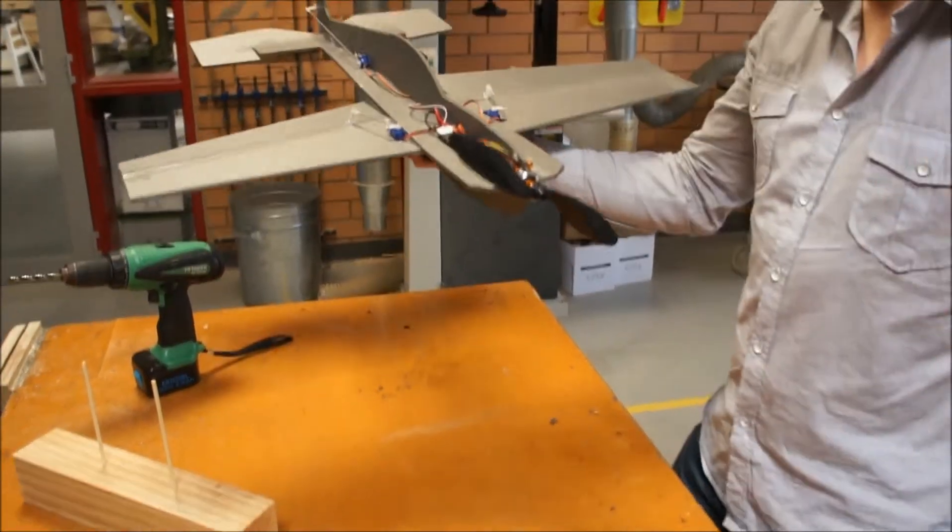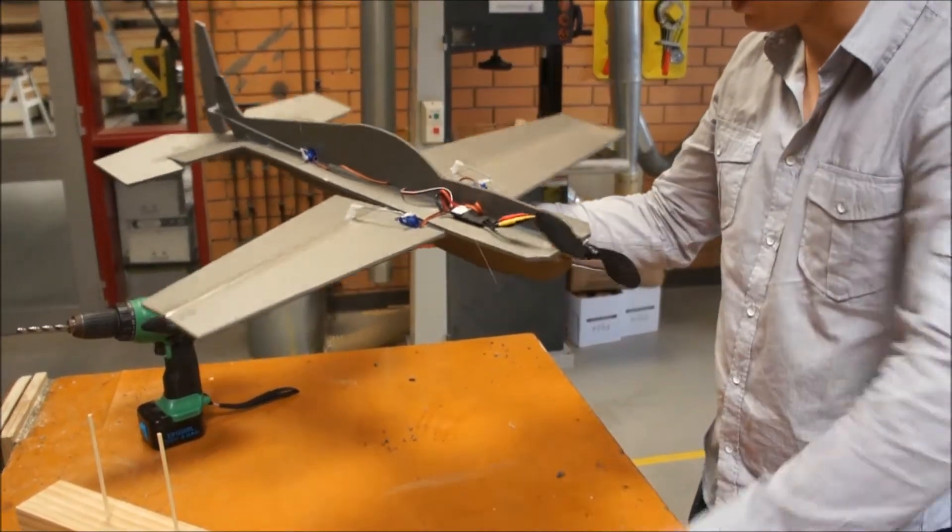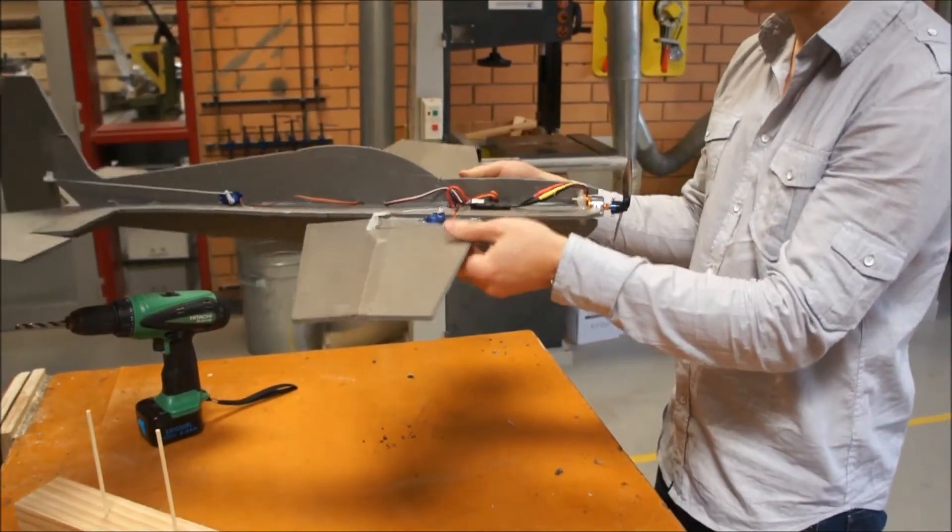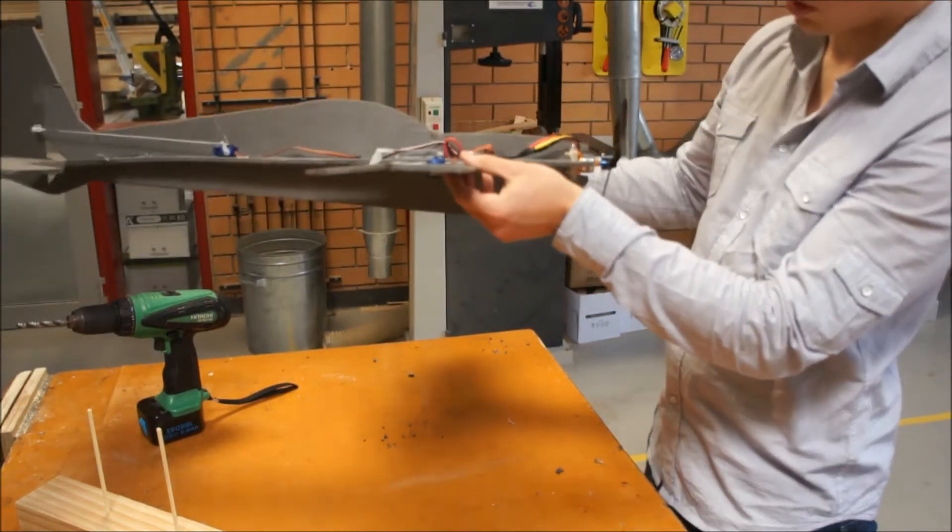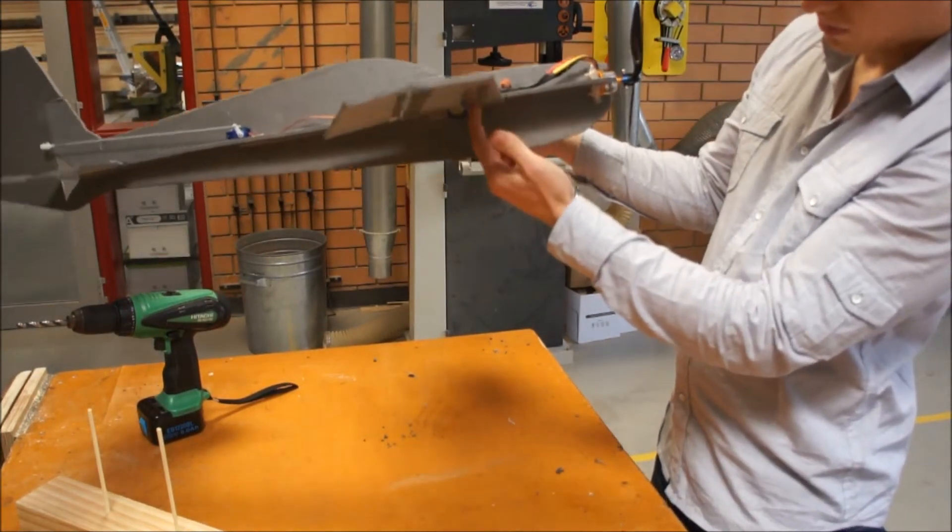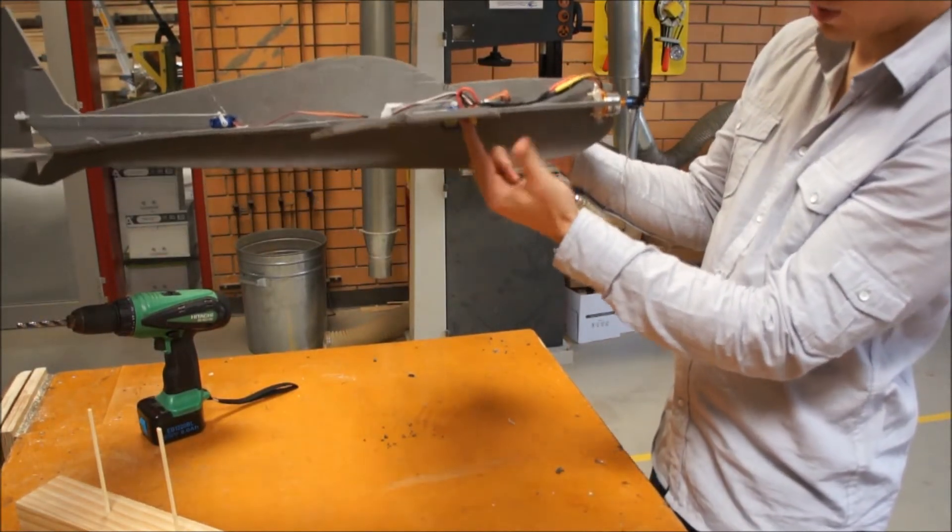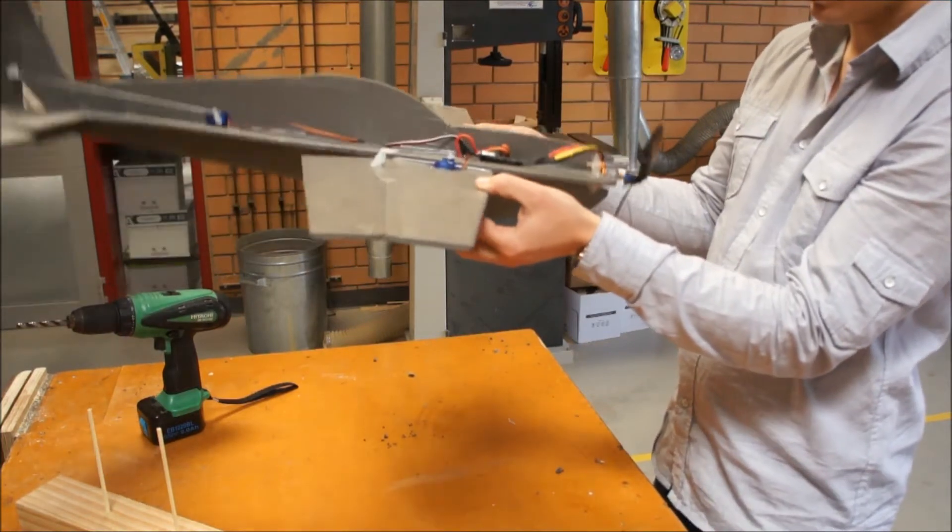Now we're looking to have, for the best stability of this sort of shaped plane, I guess based on an Extra 300, we're looking to have the weight in the front third of the wing. So if I put my two fingers under there at the moment, it's dropping back.